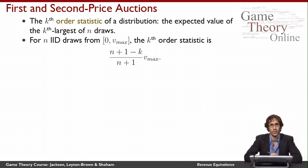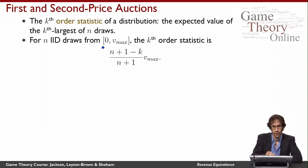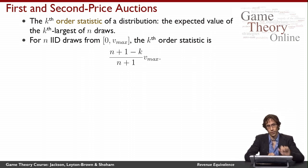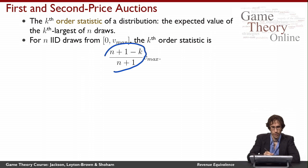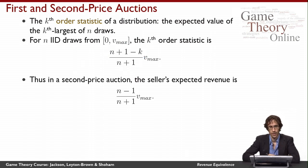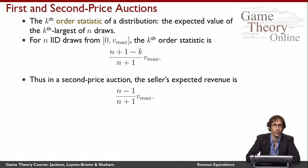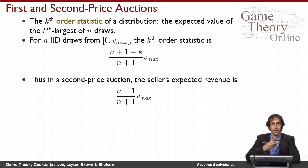Here's a useful formula to know. If I make n IID — that is, independent and identically distributed — draws from the uniform distribution over the range 0 to Vmax, the kth order statistic is this fraction multiplied by Vmax. Using this fact directly, I can conclude that in a second price auction, the seller's expected revenue is this fraction. That's because in a second price auction, the seller's expected revenue equals the expected value of the second highest bidder, and so substituting in gives us this expression.